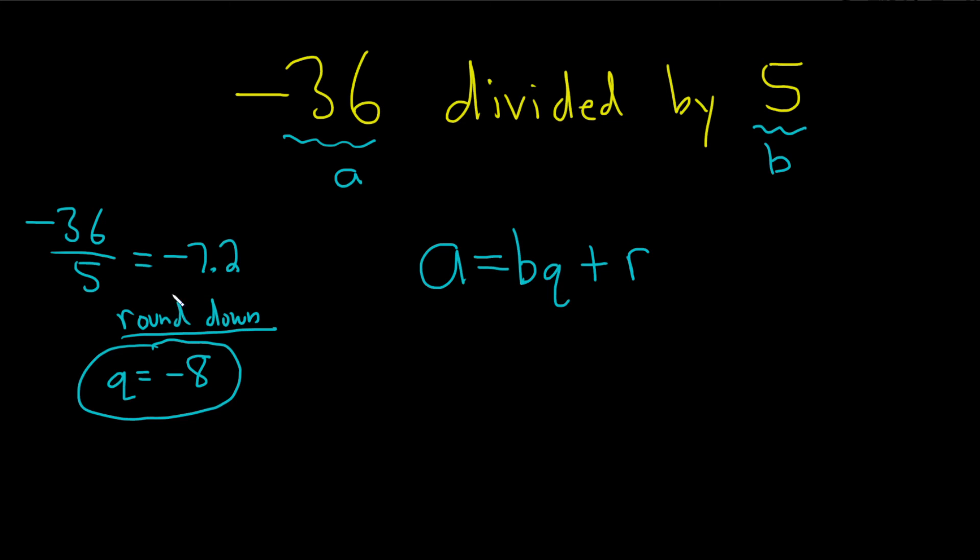To find the remainder you plug everything you have into your formula. So A is negative 36, B is 5, and then Q is negative 8. Sometimes I write it as QB by the way, sometimes it's written this way. It's the same thing, it just depends on the book.